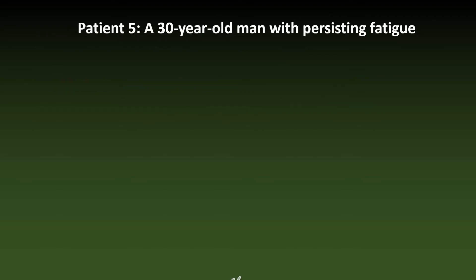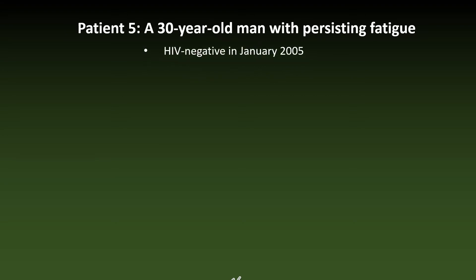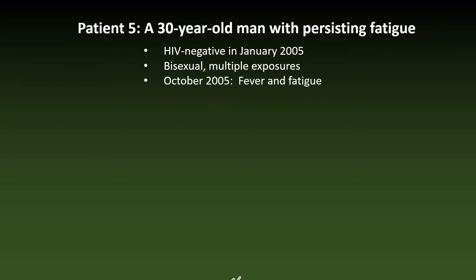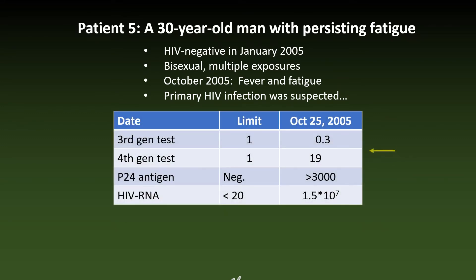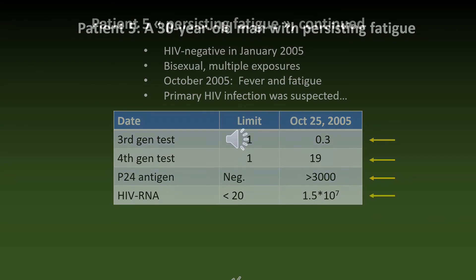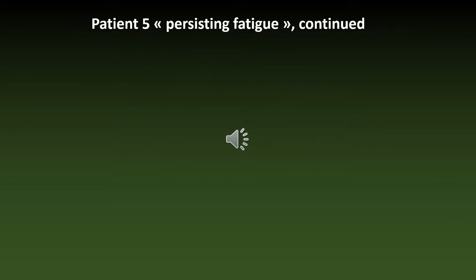The next patient was a 30-year-old known to be HIV negative in January 2005, but with multiple sexual exposures. When he complained of fever and fatigue in October 2005, primary HIV infection was suspected and confirmed by laboratory tests — a negative third-generation test but positive fourth-generation test with extremely elevated levels of P24 antigen and HIV RNA. Note that in 2005, treatment was not deemed to be indicated because the symptoms of PHI disappeared spontaneously.